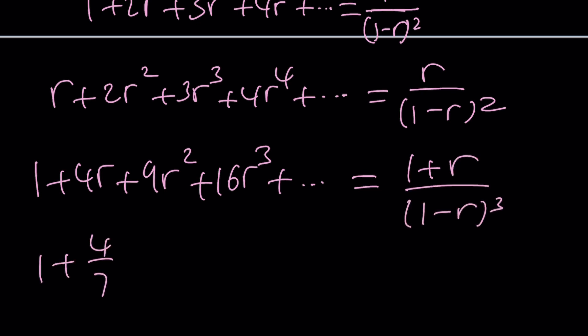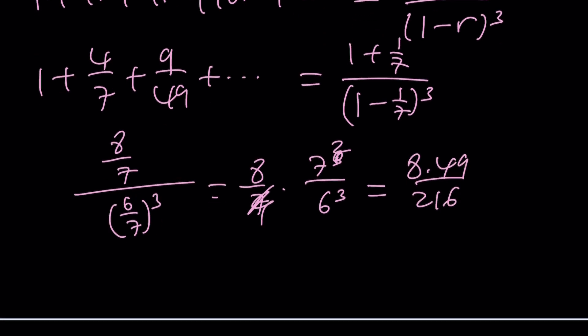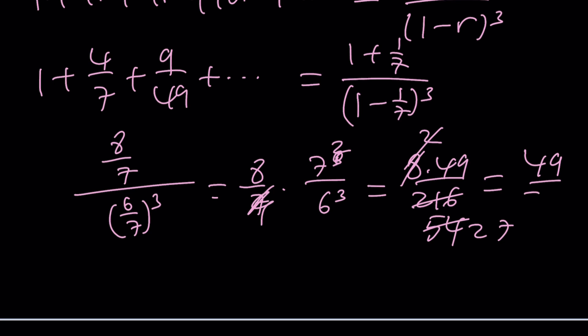So with the 7, this R is going to be 1 over 7. You're just going to replace R with 1 over 7: 1 plus 1 over 7, divided by 1 minus 1 over 7 to the third power. That's going to give us 8 over 7 divided by 6 over 7 to the third, which is 8 over 7 times 7 to the third divided by 6 to the third. I can cancel out one of these and end up with 8 times 49 divided by 216. Half of this is 108, half of that is 54 divided by 4, this becomes a 2, and this becomes a 27, and the answer would be 49 over 27.